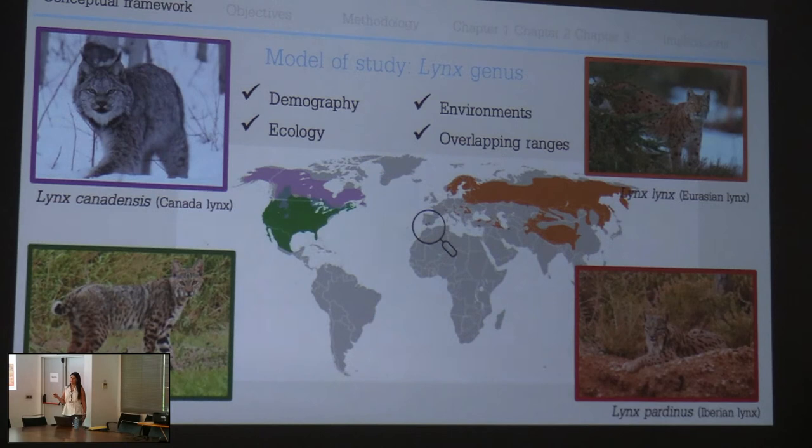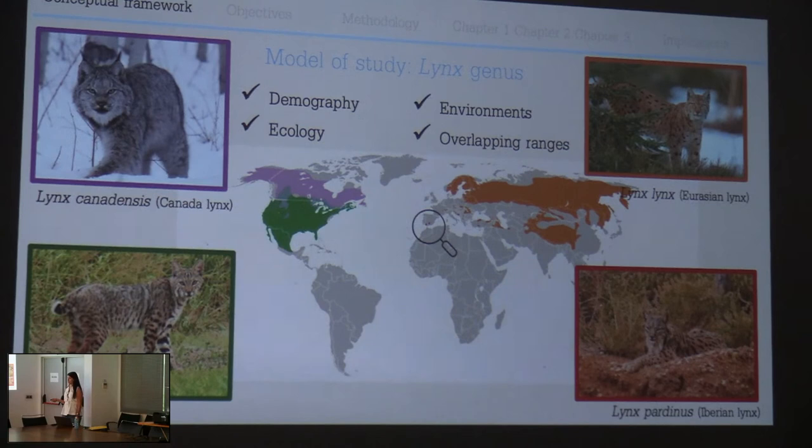The lynx genus is formed by four species. The first is Lynx canadensis, which I'll refer to as Canada lynx; Lynx rufus, the bobcat; Lynx lynx, the Eurasian lynx; and Lynx pardinus, the Iberian lynx.